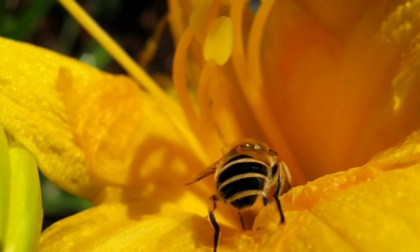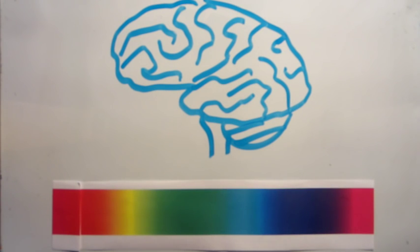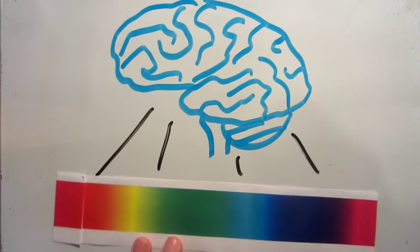Humans can distinguish about a million different colors. This scale represents every color you can see. Each part of it looks slightly different to you, right? So somewhere in your brain, each color must have a unique representation. How might your brain be accomplishing this?